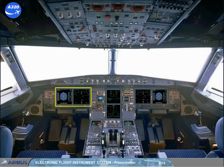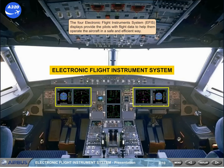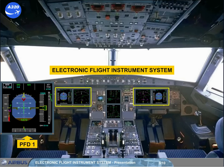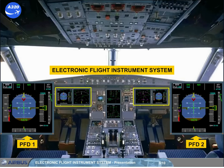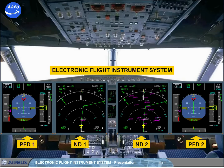The four electronic flight instrument system EFIS displays provide the pilots with flight data to help them operate the aircraft in a safe and efficient way. Flight parameters are displayed on primary flight displays, PFD, while navigation data is displayed on navigation displays, ND.